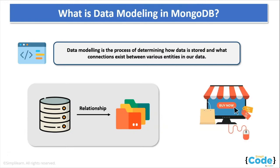For example, consider an online shopping store where thousands of customers arrive daily and purchase new products. We get a lot of unstructured data — the name of the customer, their details — which is basically unstructured data. In order to convert it into properly structured data, we need to model it in a particular way. This is where data modeling comes into the picture, where we store the data based upon our requirement.